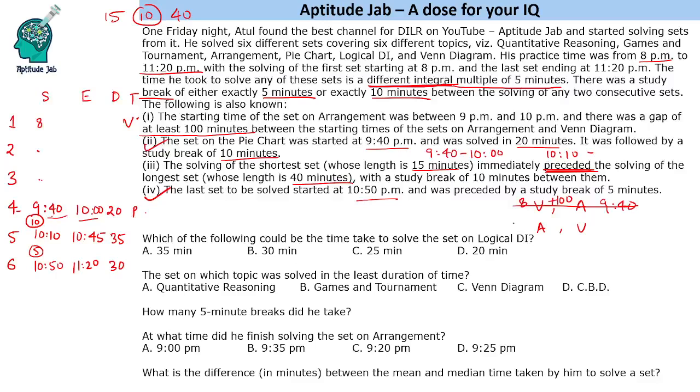Now the solving starts after 9:00 PM, between 9:00 PM and 10:00 PM. So let us say if you take 9:00 PM. It has to be between 9:00 PM. When we do not use the word including, we need to assume that it is after 9:00 PM. So 9 plus, and there is at least 100 minutes gap. So even if you add 9 plus 100, that will be 10:40. So Venn diagram should start after 10:40. So this means the last set is on Venn diagram.